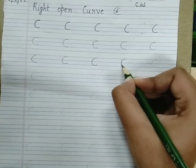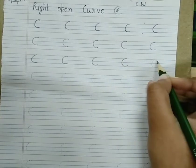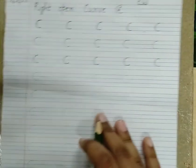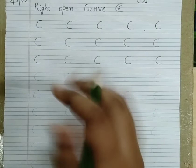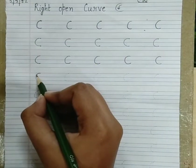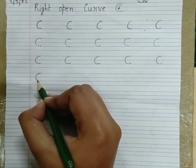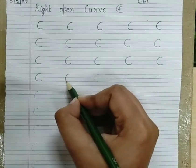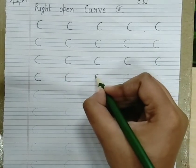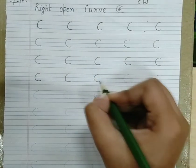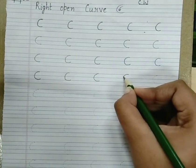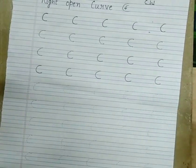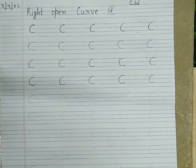Join one dot to another — this is our right open curve. Again, join the dots, join one dot to another. You only have to do tracing, joining these dots.